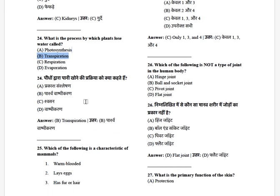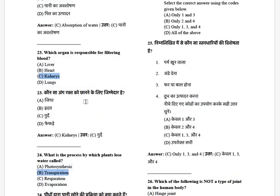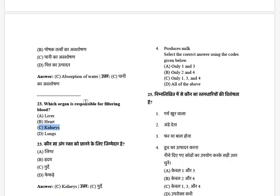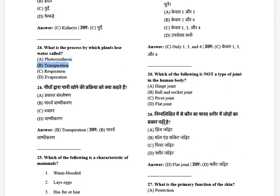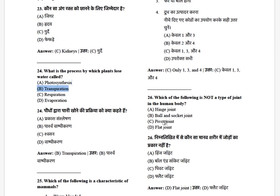Which of the following are characteristics of mammals? The options are: warm-blooded, lays eggs, has fur or hair, and produces milk. The answer is C — mammals don't lay eggs (excluding monotremes).